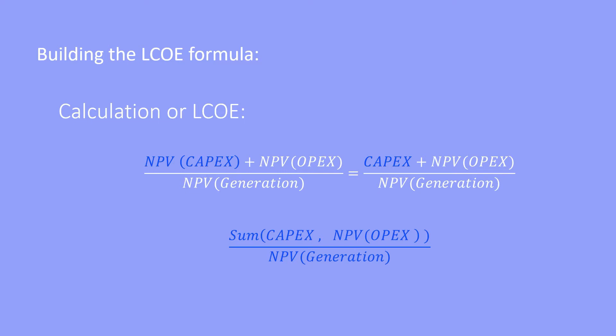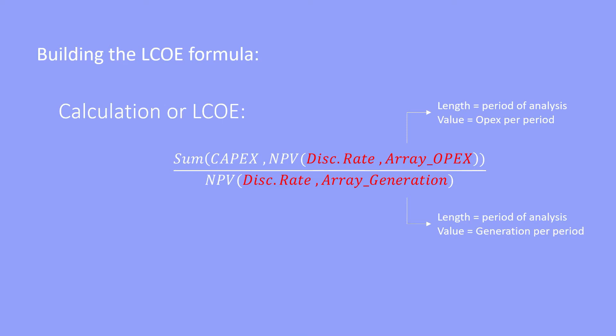We need to further break down the NPV formula. We know from our previous videos that the NPV formula in Excel has its own arguments, which are the discount rate per period and an array with all the values that need to be brought to the present value for each one of the periods. The length of the array will be equal to the total number of periods, and the value of each number in the array will be equal to the OPEX for the NPV calculation in the numerator and the total generation for the NPV in the denominator of the LCOE formula.